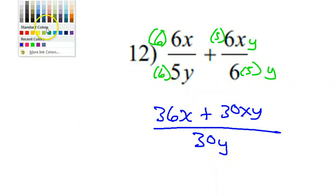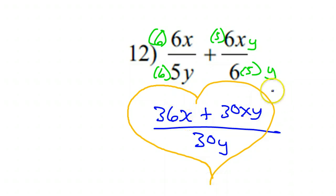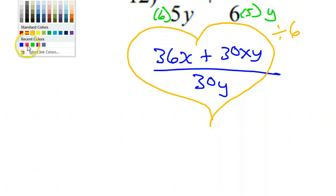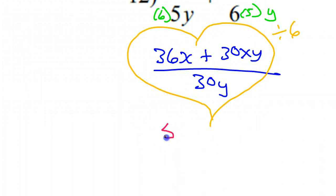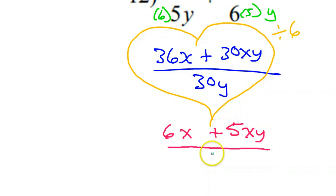Now all of these have something in common — they're all divisible by 6. That's the GCF of all three terms. So I'll divide all these by 6. That's going to give me 6x plus 5xy over 5y. This will be the final answer.